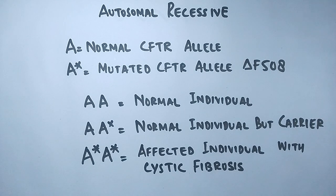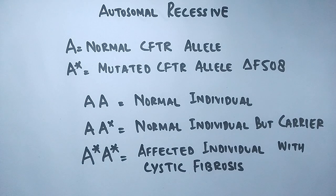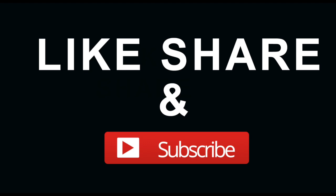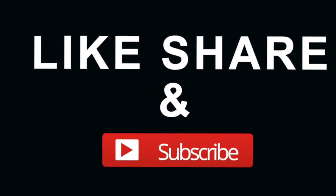This condition only arises when both parents donate a mutated allele — one from the father and one from the mother. That covers cystic fibrosis and its genetics.